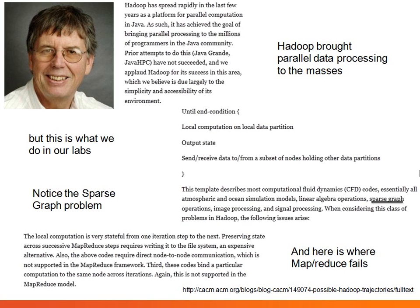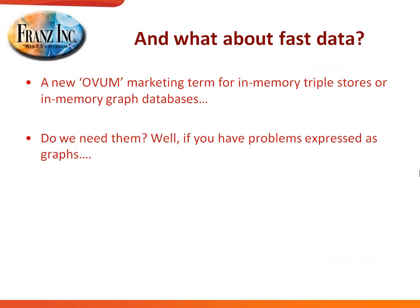Now about the third class of databases: fast data. Fast data is a new term coined by Alpham, probably funded by Cray, who came out with YARC data. They needed a marketing term that looked different from big data, so they came up with the word fast data. The first question is: do we really need these fast data graph databases? Well, the obvious answer is yes — if you deal with graph data, then a graph database is obviously specialized for that.